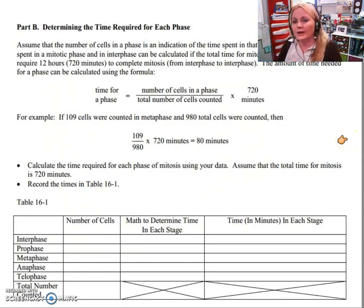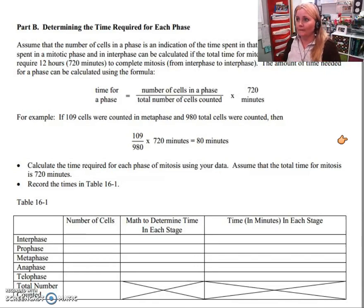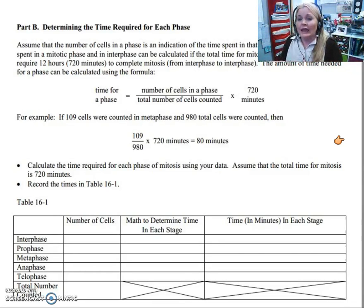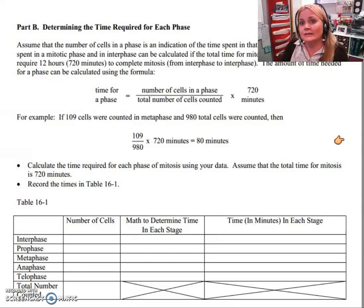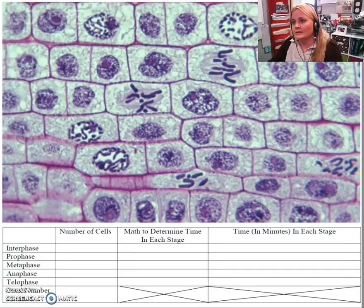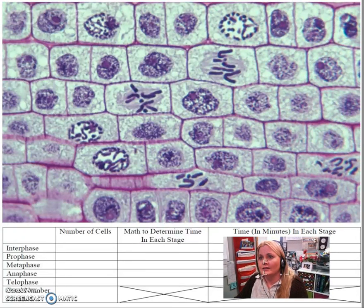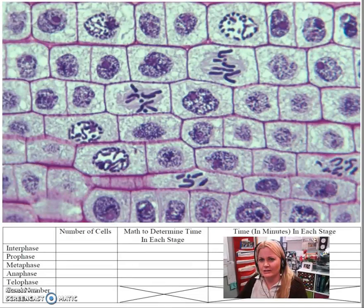One of the coolest things you can do is take microscope slides — in a traditional classroom I'd have you take a piece of onion skin, make a slide of it, and go through counting the number of cells you find in each phase of the cell cycle. Instead, I have a picture here. We're going to determine which phase each cell is in and then calculate the ratio of cells in each phase to make a pie chart.